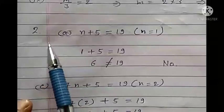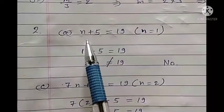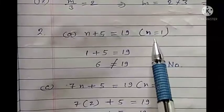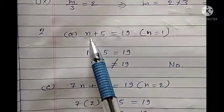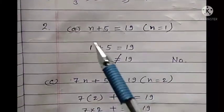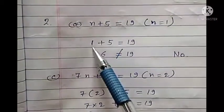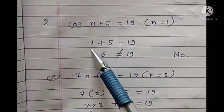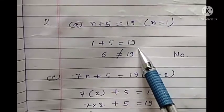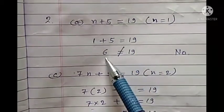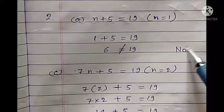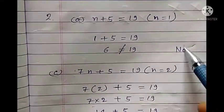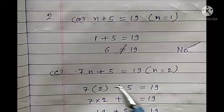First of all, in the second question, part (a): n plus 5 equals to 19, where n equals to 1. The value here is 1. We have to put n equals to 1. So, 1 plus 5 equals 6, which is not equal to 19. So here the answer is No — it is not equal.